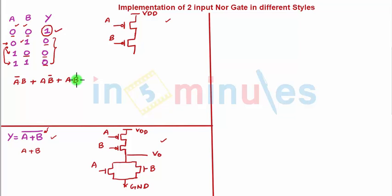So this is nothing but the expression for my pulldown network. If we substitute this using the basic theorems that we have learned in the past, A plus A is equal to A. So I can add an additional AB here. AB plus AB is going to be AB.